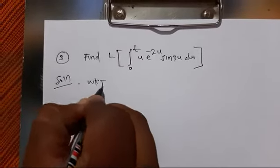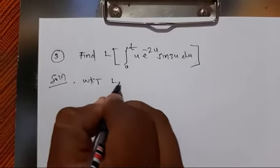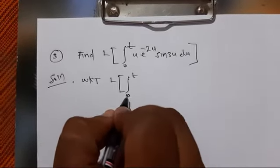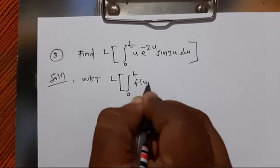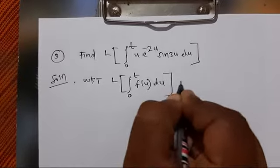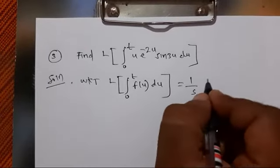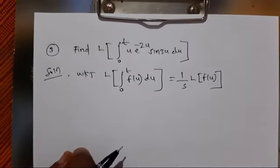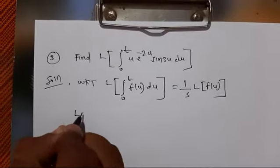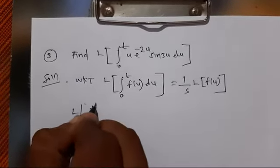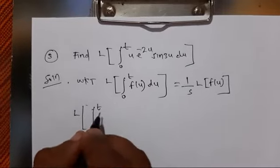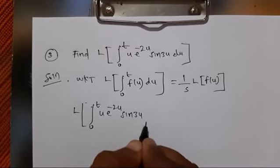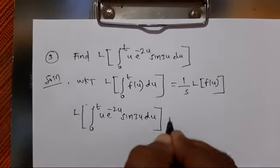Solution: We know that L{∫₀ᵗ f(u) du} = (1/s) · L{f(u)}. Therefore, L{∫₀ᵗ u · e^(-2u) · sin(3u) du} = (1/s) · L{t · e^(-2t) · sin(3t)}. I will denote this as equation number 1.